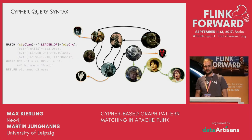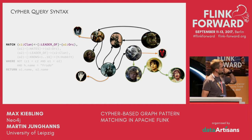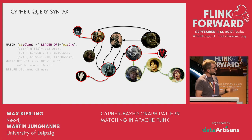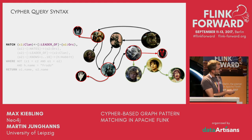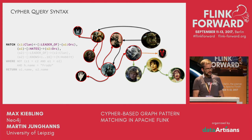Let's go through this example step by step to see what subgraph gets returned. We say we're looking for clans and their leaders — so we have one clan leader here, another here, and another one. Then we say the orc o1 needs to hate another orc o2. This one comes into play because he's hated by this clan leader; this one also comes into play. But this clan drops out because this orc doesn't hate anyone.